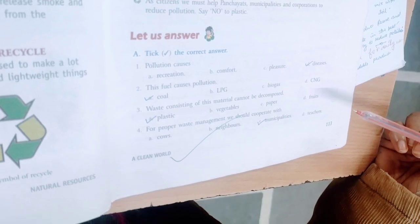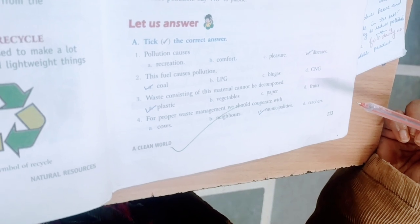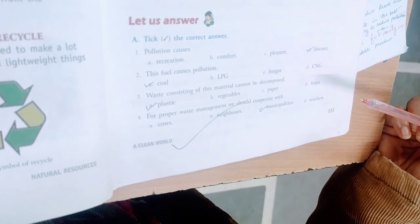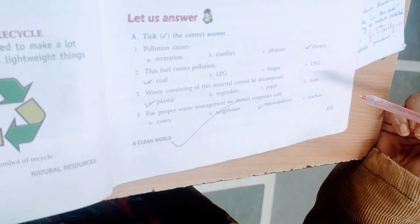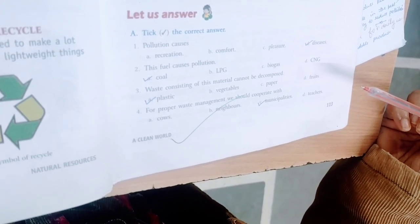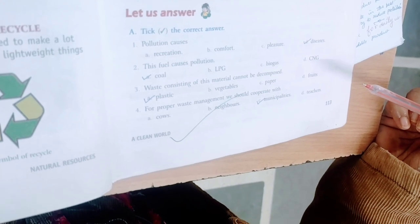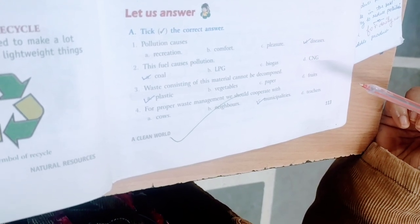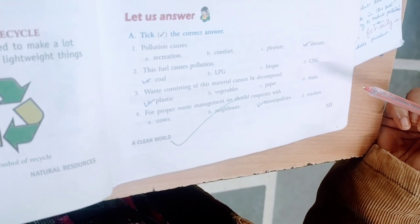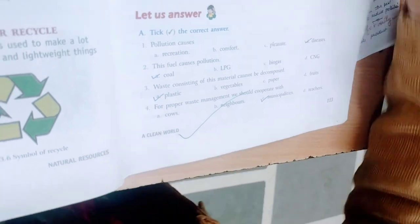Fourth point: for proper waste management, we should cooperate with — A: cows, B: neighbors, C: municipalities, D: teachers. For proper waste management, we should cooperate with municipalities. Take right on the C part.